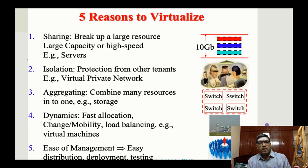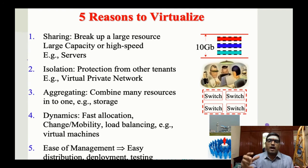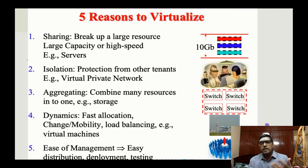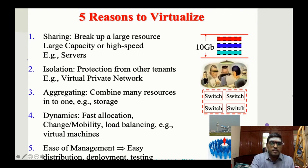Next is dynamics — fast resource allocation, change, mobility, and load balancing. For example, when millions and trillions of users are using a particular web browser at the same time, the load balancing is different. You can switch over to another server. At the time of execution, you make changes dynamically. That is called dynamism.